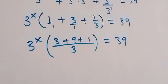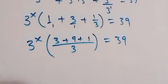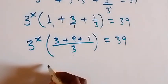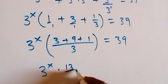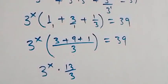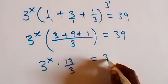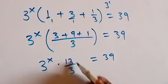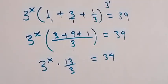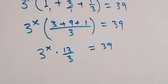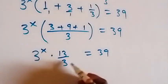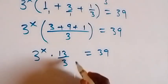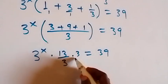From here we have the sum of this, that's 13 over 3. So we have 3 raised to power x multiplied by 13 over 3, and that equals 39. Then, let's remove this 13 over 3 on this side and multiply with the reciprocal on both sides. The reciprocal of 13 over 3 is 3 over 13.